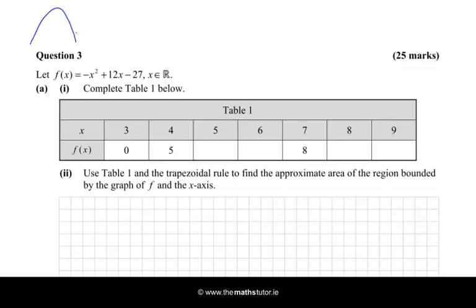And we're asked to complete the table below. So in the table we have two rows. We have x values ranging from 3 to 9, and we have the corresponding f of x value. So for example, when 3 is substituted in, we get 0. When 4 is subbed in, we get 5.